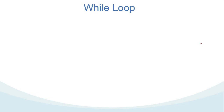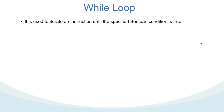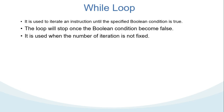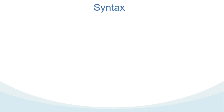The while loop is used to iterate an instruction until the specified boolean condition is true. The while loop will stop once the boolean condition becomes false. The while loop is used when the number of iterations is not fixed. Let's see the syntax.